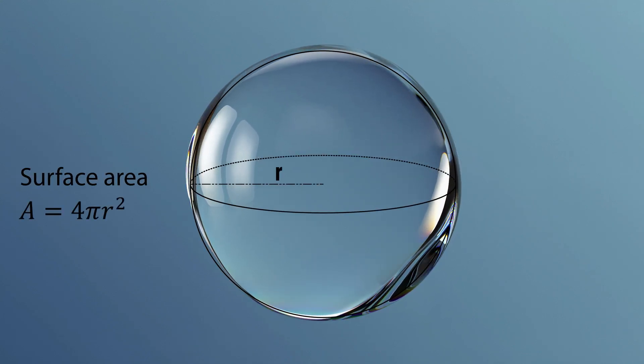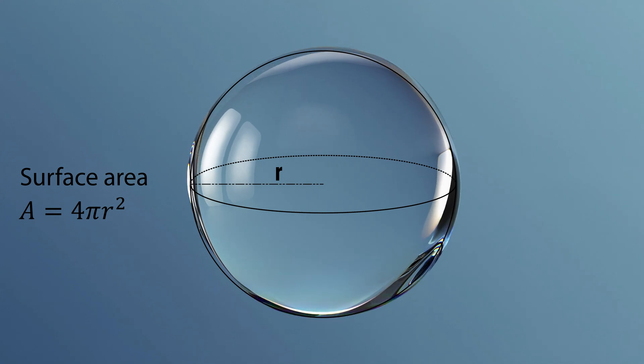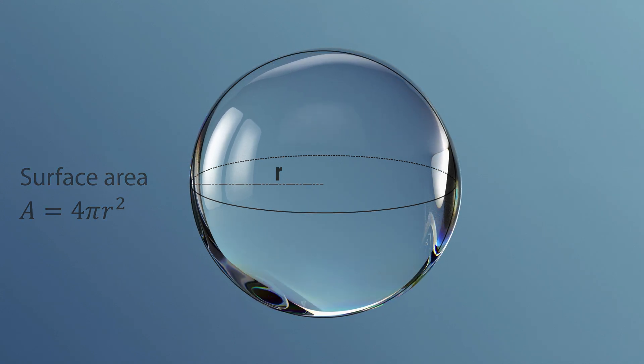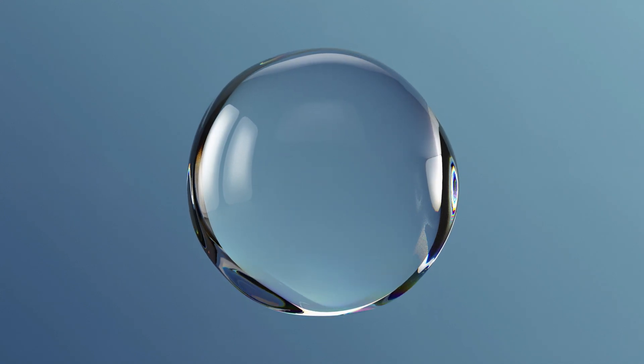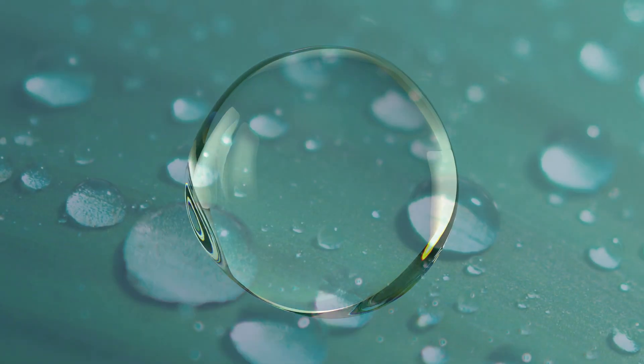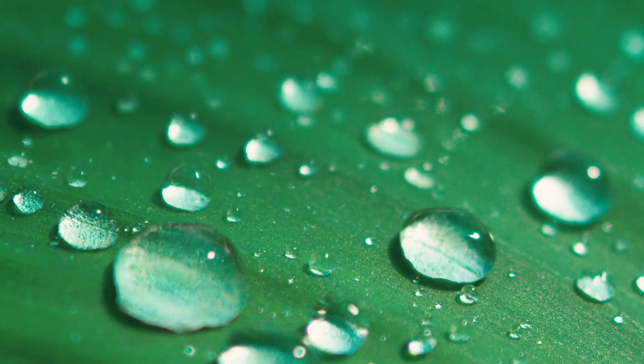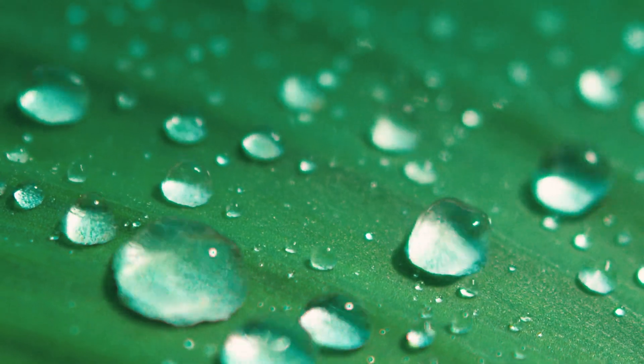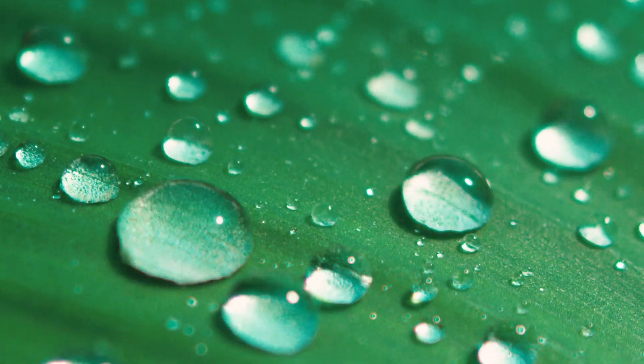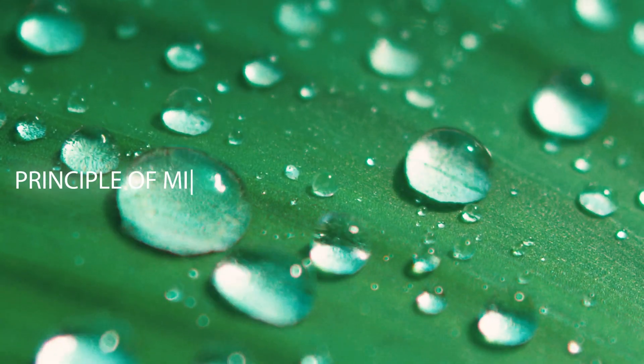By reducing its surface area to the smallest possible size, a droplet achieves an energetically efficient and stable form, demonstrating the elegant simplicity of physical laws at work. This is one of the cornerstone principles in physics, when studying the behavior of the natural world, better known as the principle of minimum energy.